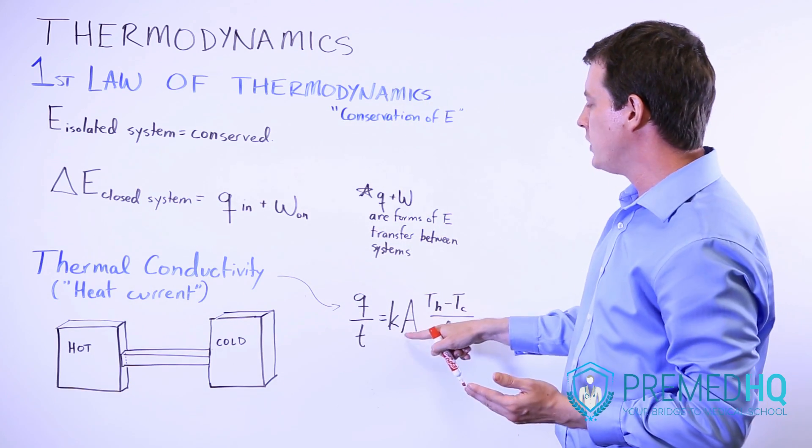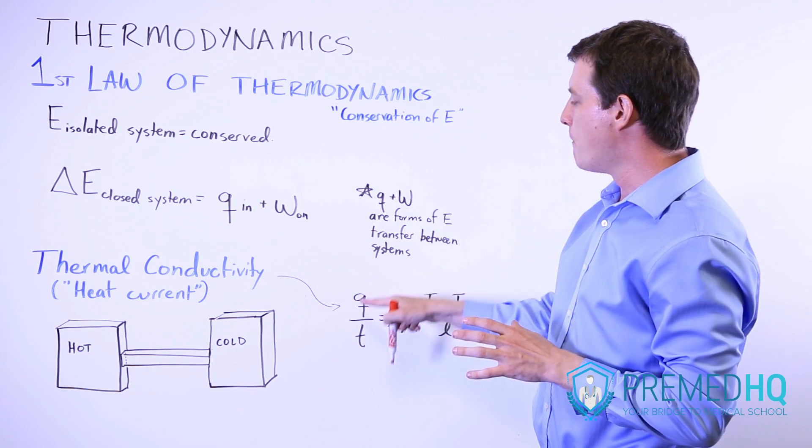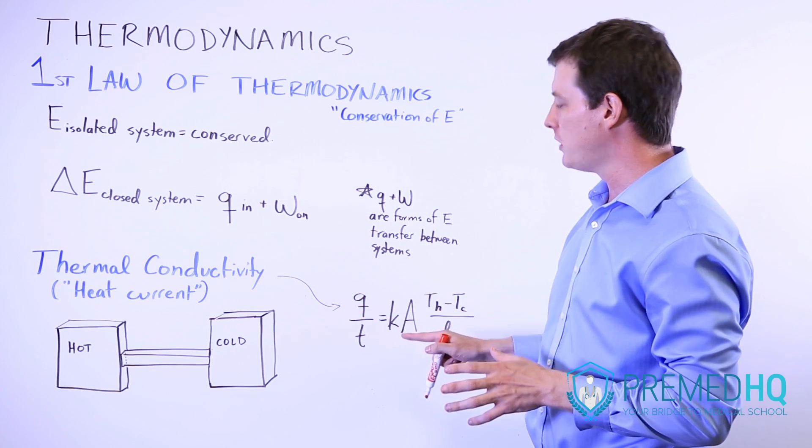And so if you increase the cross-sectional area, that means that more heat can transfer through per unit of time.